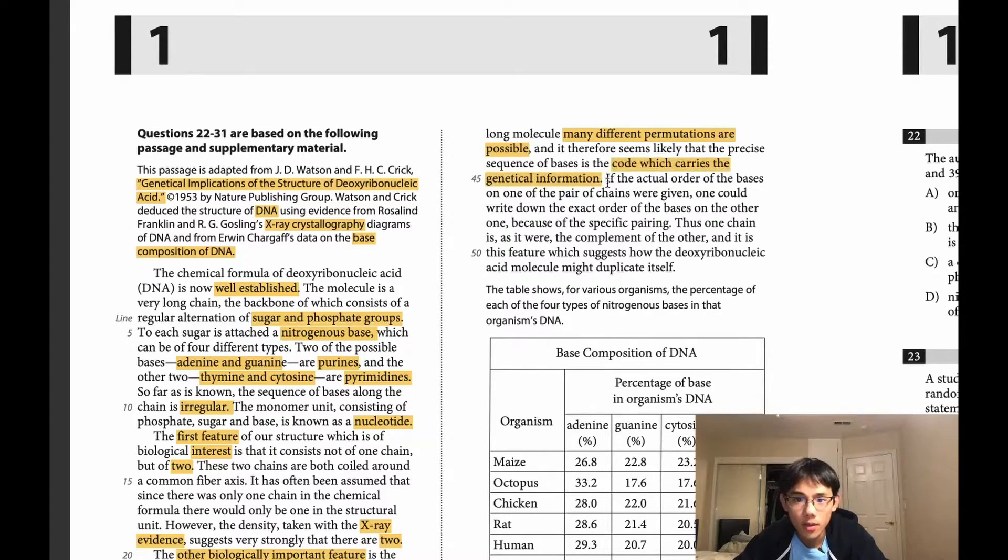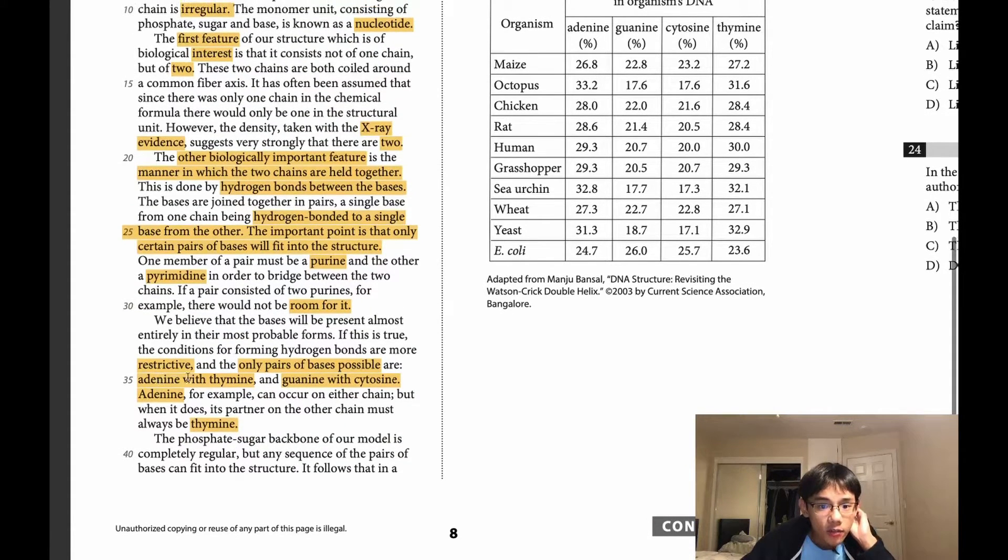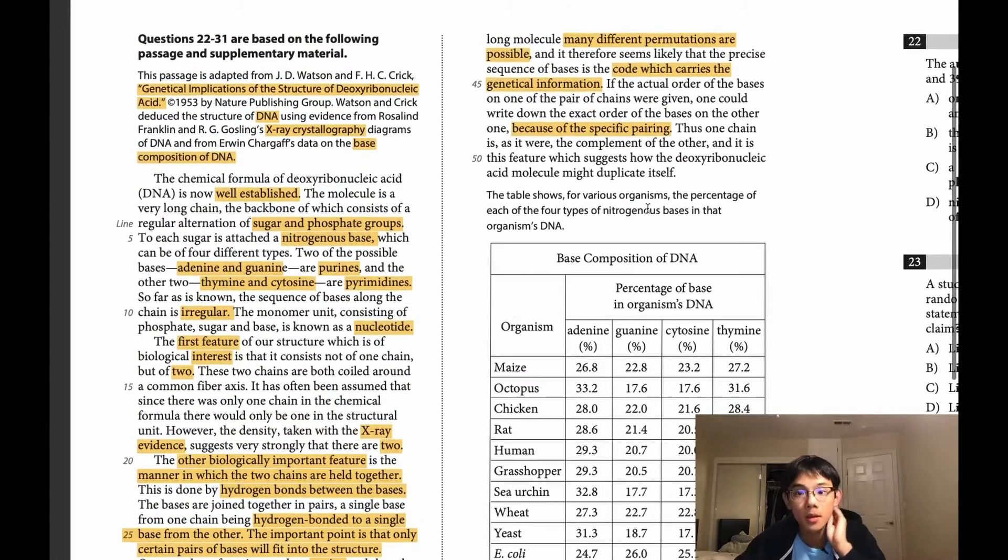If the actual order of the bases on one of the pairs of chains were given, one could write down the exact order of the bases on the other one because of the specific pairing. This is true. So for example, if on one chain we had adenine followed by guanine, then we know that on the second chain, it must be thymine followed by cytosine. Because once again, as we read in this paragraph, the rule is that adenine must be paired with thymine and guanine must be paired with cytosine.